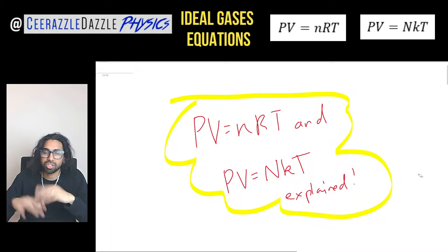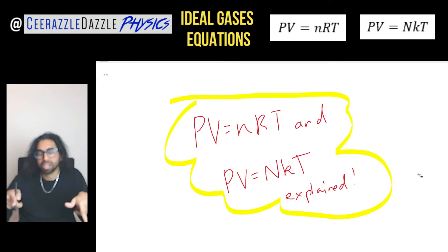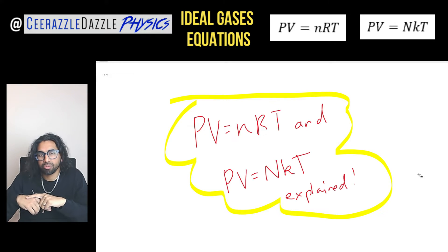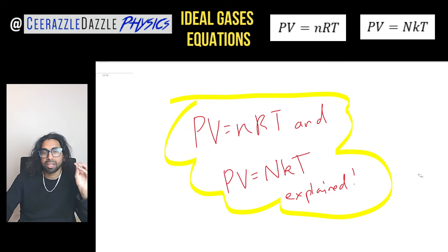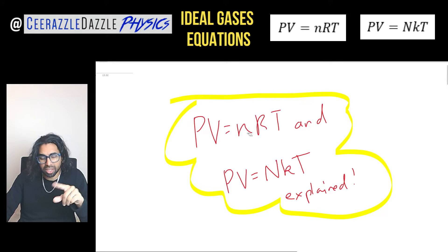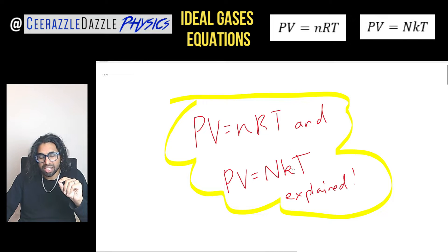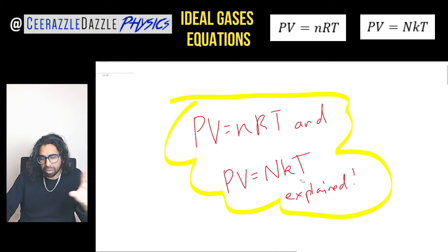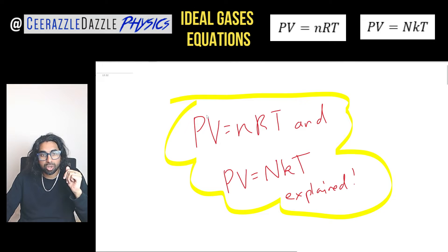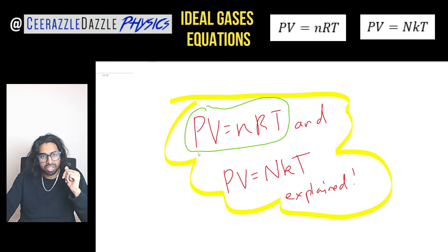Hey everyone, welcome to another session of Surrands or Dazzle Physics. In today's video I'm going to be walking you through the ideal gas equations: PV = nRT, where it's a lowercase n, and PV = NkT, where it's a capital N. I'm going to explain how we get the first equation and the second one and the link between them, starting with PV = nRT and then leading on to PV = NkT.